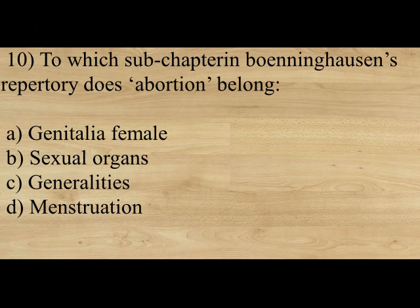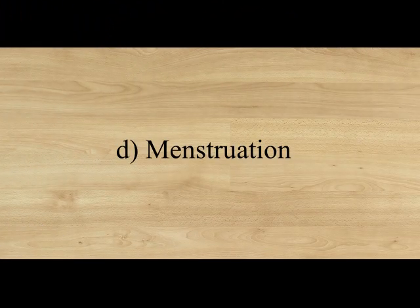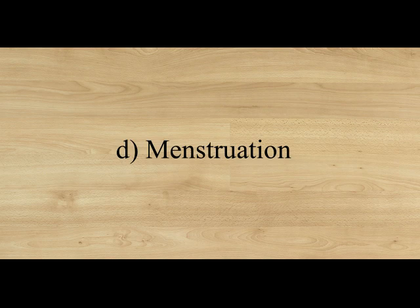To which sub-chapter in Boenninghausen's repertory does abortion belong? Option A: Genitalia female. Option B: Sexual organs. Option C: Generalities. Option D: Menstruation. The answer is Option D, Menstruation — the rubric is abortion. If the question is asked from Kent's repertory, the answer is Genitalia female. If asked from BBCR repertory, it is also present in Genitalia female. So in Kent's and BBCR, abortion is under Genitalia female; in TPB (Boenninghausen's), it belongs to Menstruation.